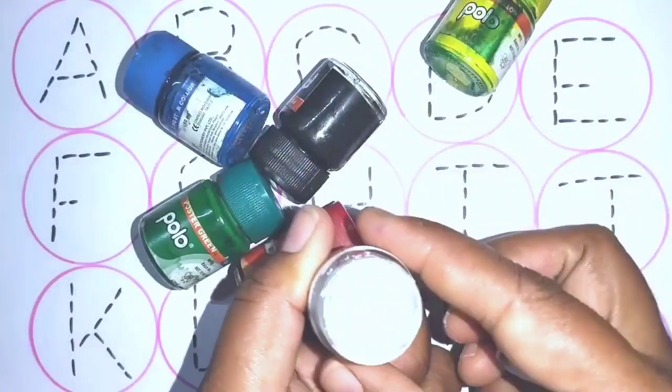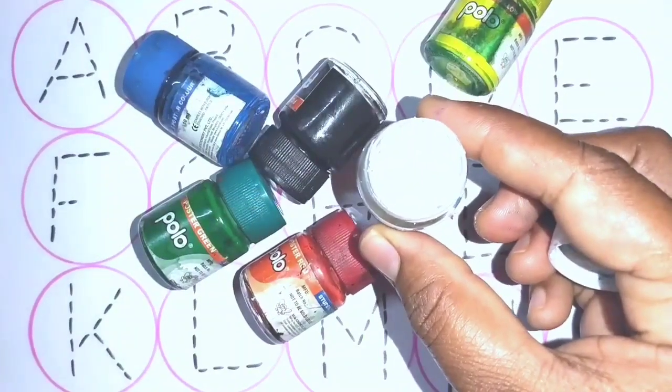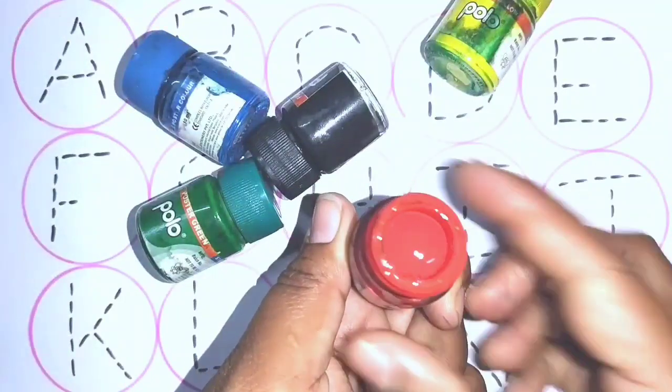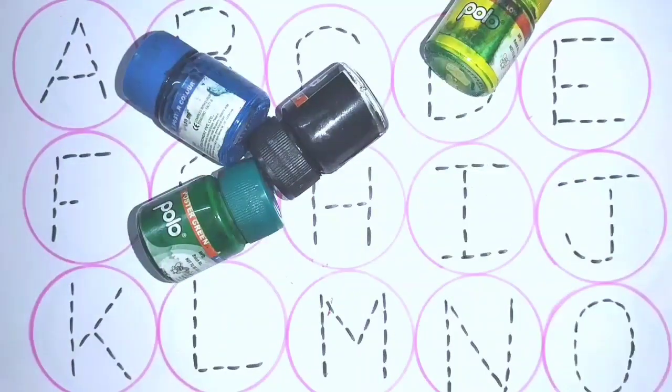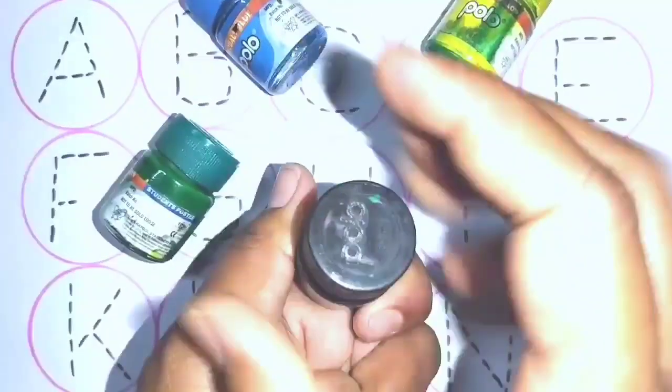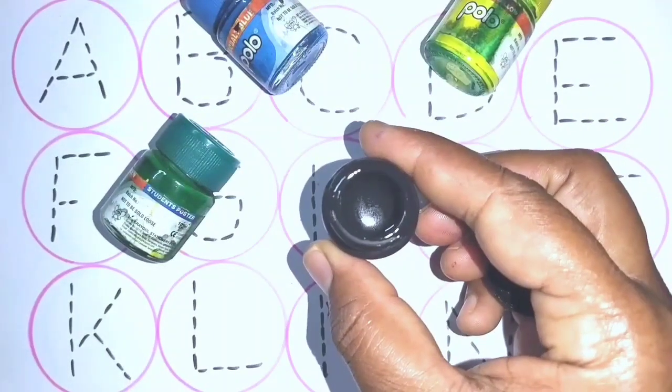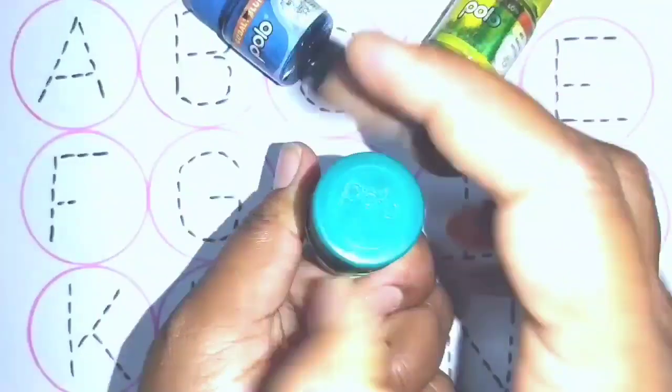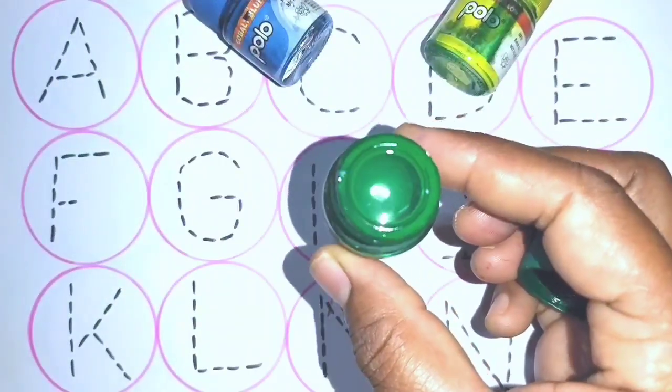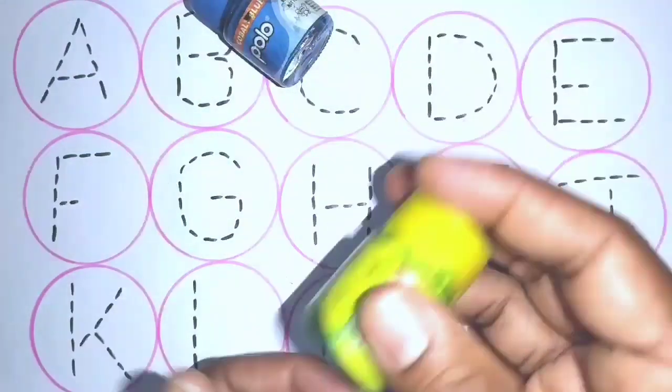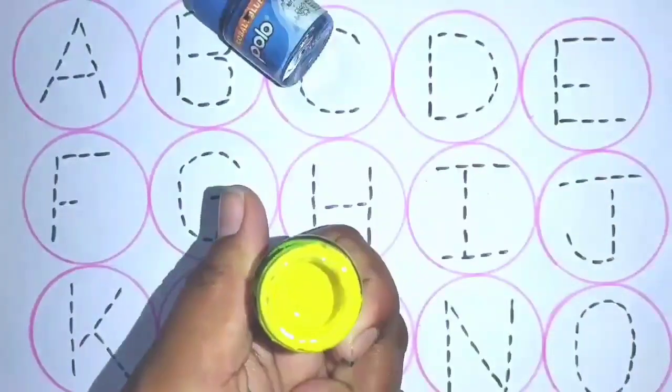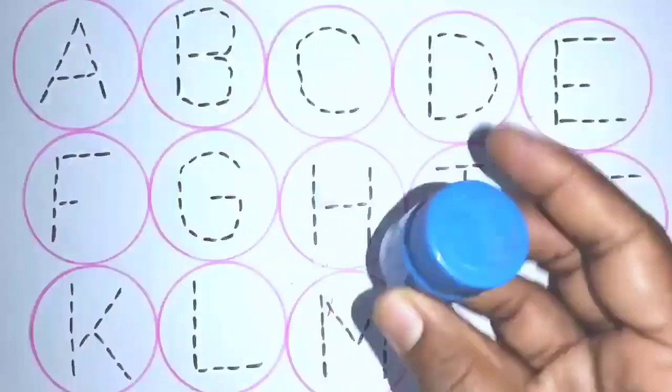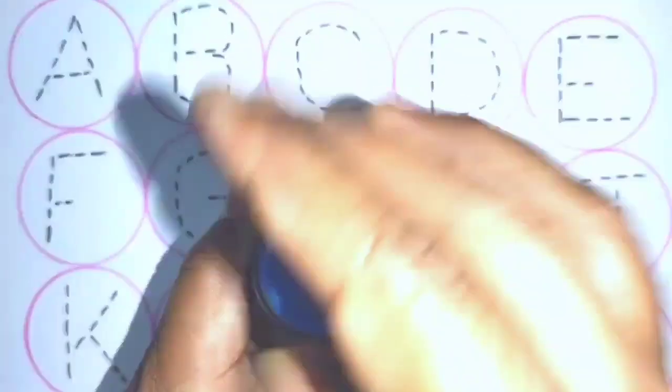First one is white color. Next, red color. Next one is black color. Next one is green color. Next one is yellow color. Last one is blue color.